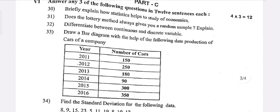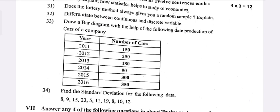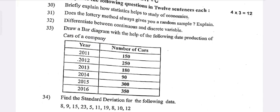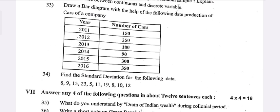Twenty-seventh: What are the implications of the one-child norm in China? Part C: Answer any three of the following questions, twelve sentences each.